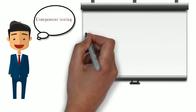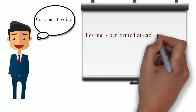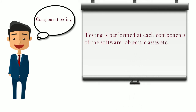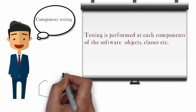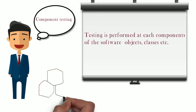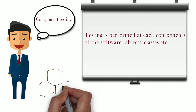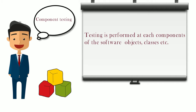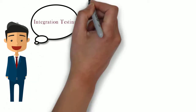The first level is component testing, where testing is performed at each component of the software. The preference of testing is given to objects and classes. In our example, the components are customer registration, placing the order, and cancellation or modification of the order. These components are developed separately and tested by developers individually — this is known as component testing.